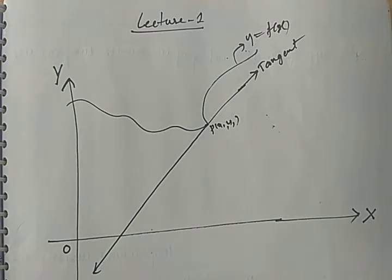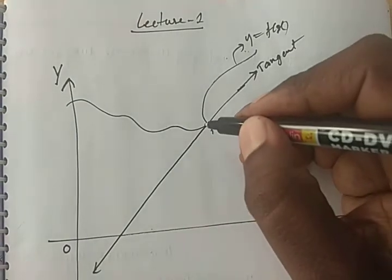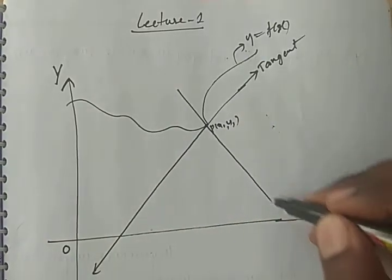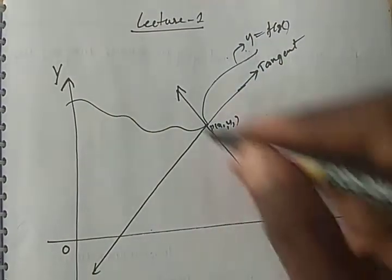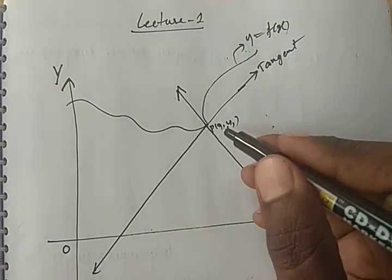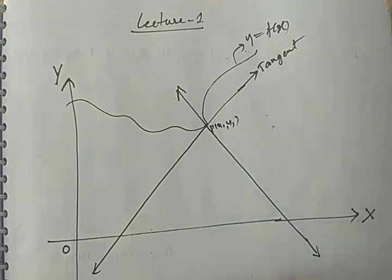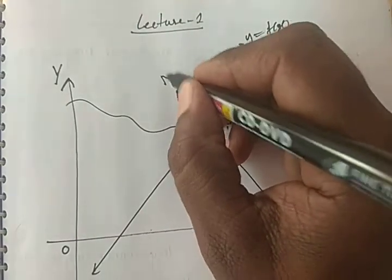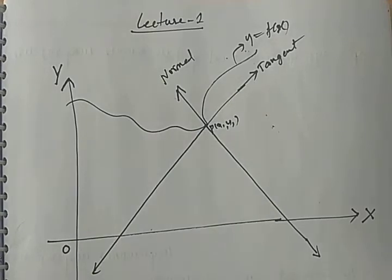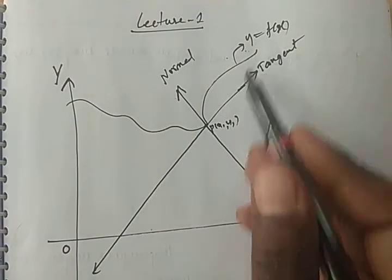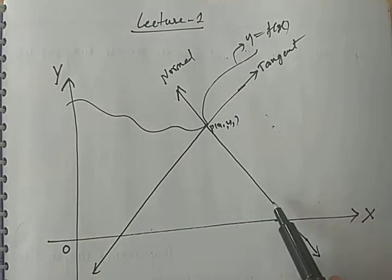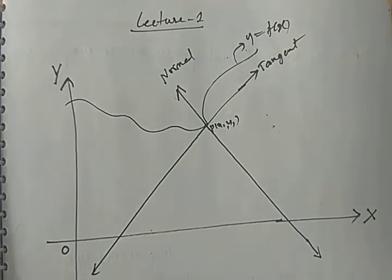Next is normal. Normal is also a straight line which is perpendicular to the tangent and passing through P(x₁, y₁). You can observe here there are 90 degrees between these two straight lines. This straight line is the tangent, and this one is the normal. This line is the tangent to the curve y = f(x) at P(x₁, y₁), and this line is the normal to the curve at P(x₁, y₁).